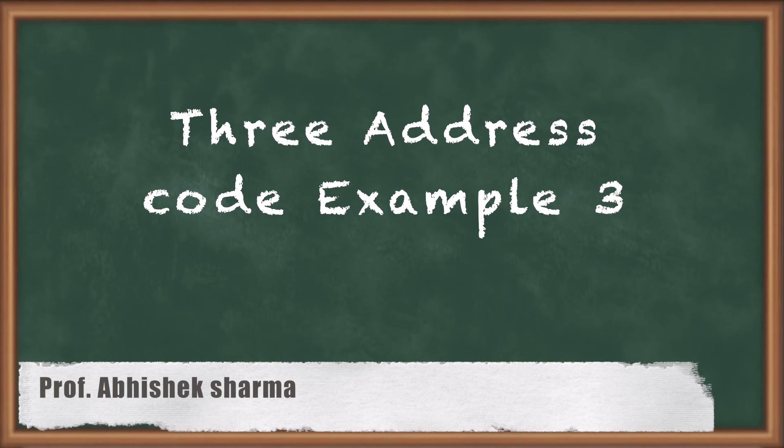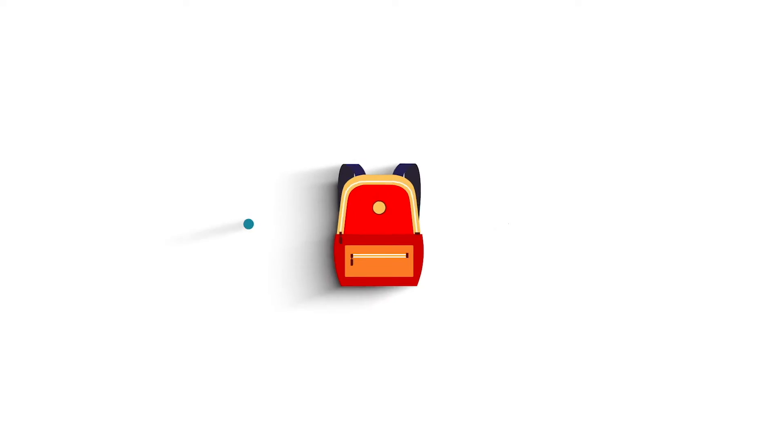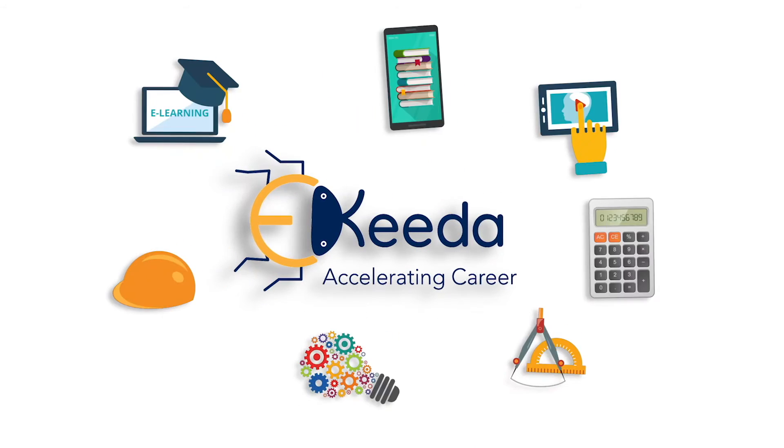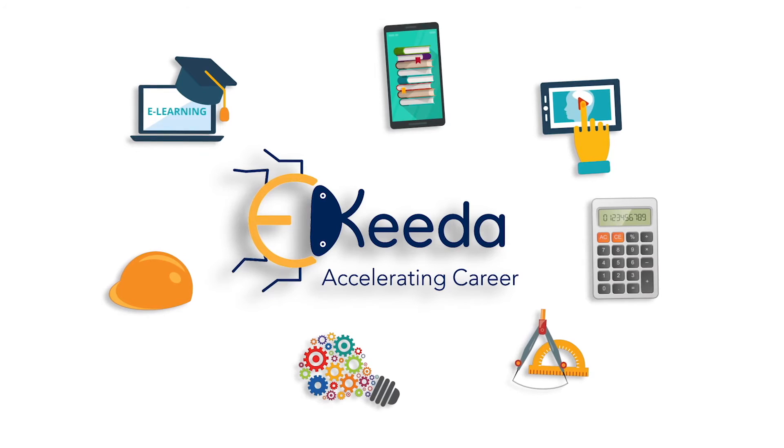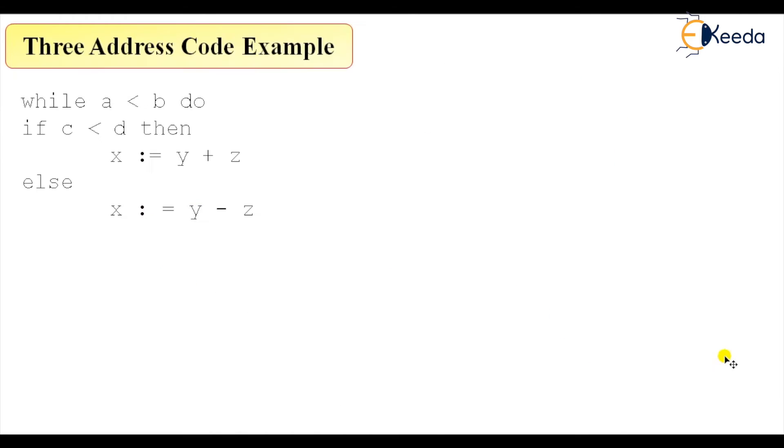Hello friends, in today's class we are going to talk about example 3 of three address code generation. We are looking at another example of generation of three address code. It may look like a complete while loop or while block for generation of this three address code.